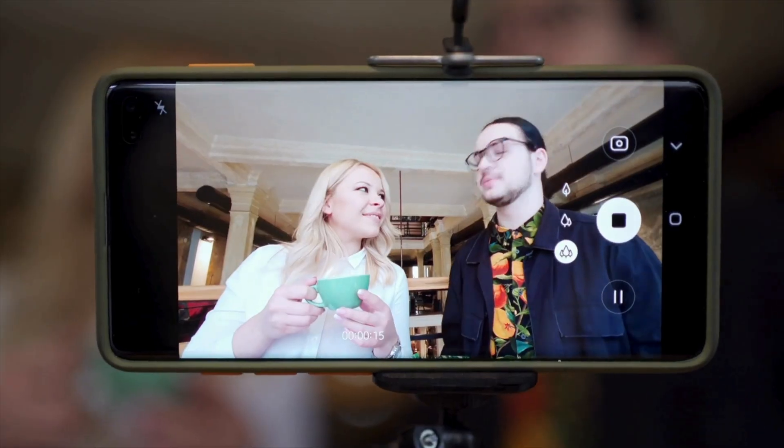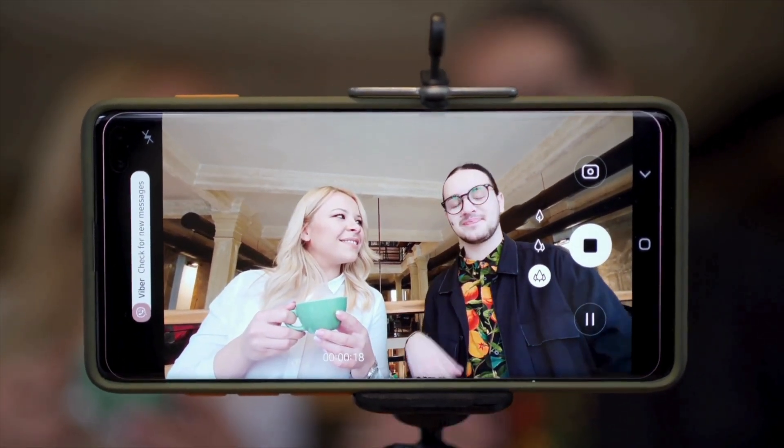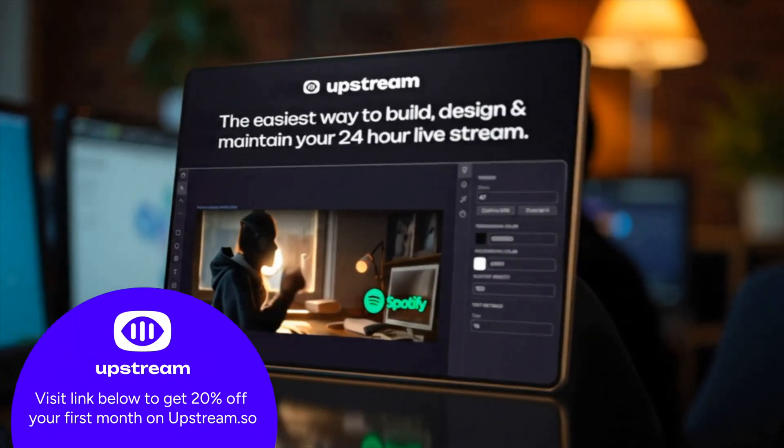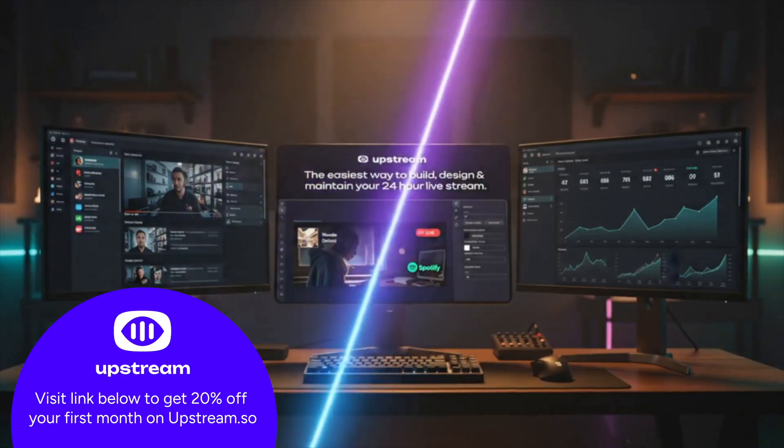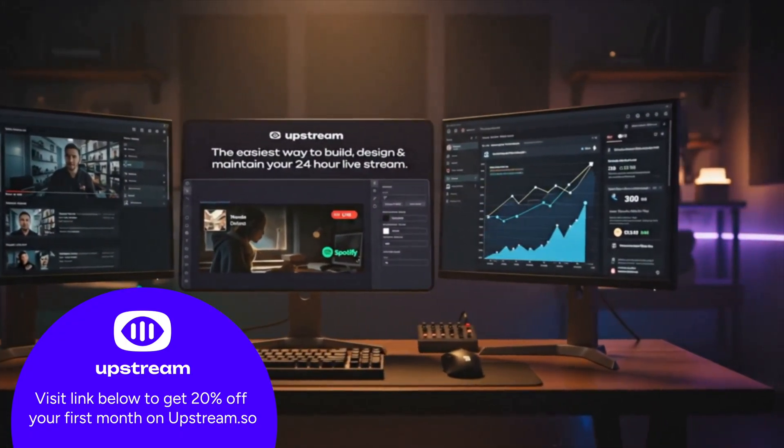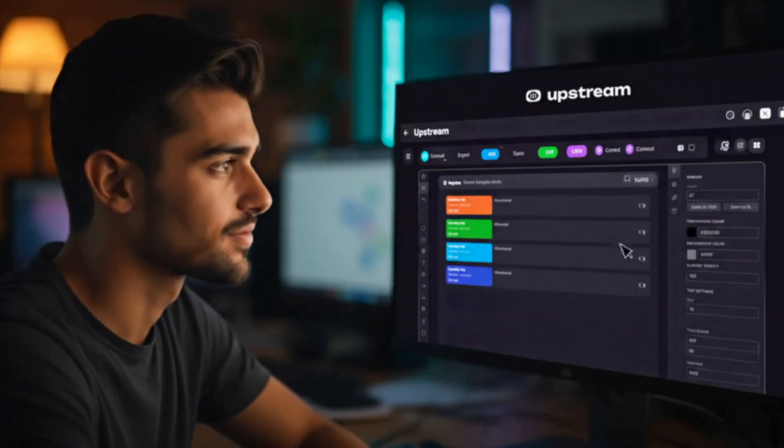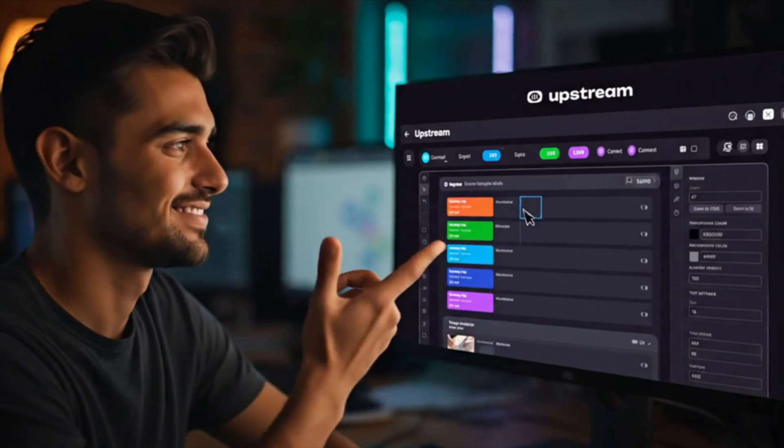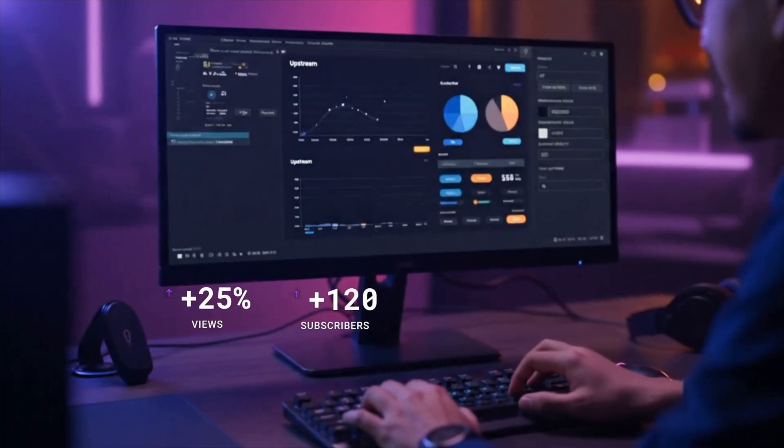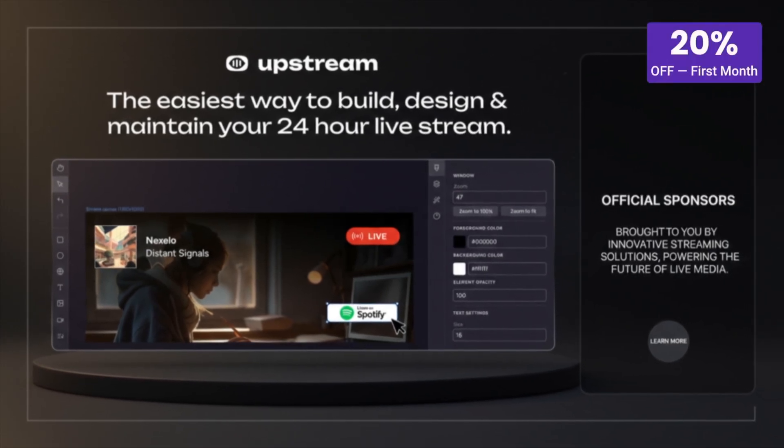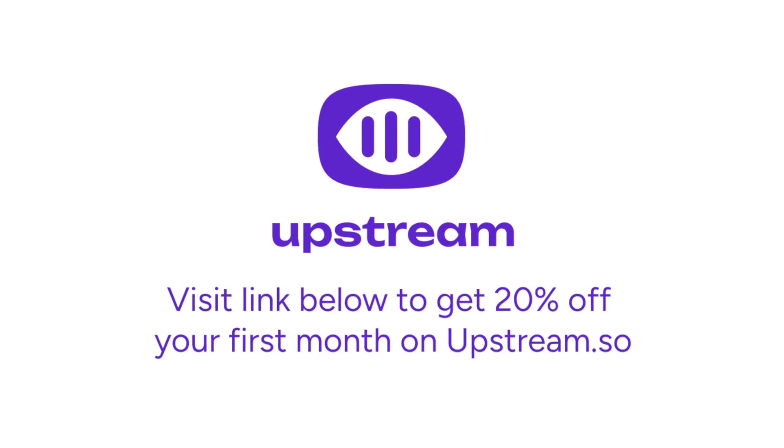This video is sponsored by Upstream. Want to grow your YouTube channel faster? With Upstream you can run a 24-7 live stream using your pre-recorded videos. Since live streams rank higher in search you'll gain more views, more subscribers, and more revenue. And it's not just YouTube. Upstream lets you multi-stream to up to 10 platforms, design custom layouts that match your brand, and schedule your content so your channel is live even when you're not. Sign up free today with the link in the description and if you decide to upgrade you'll get 20% off your first month. Start streaming smarter with Upstream.